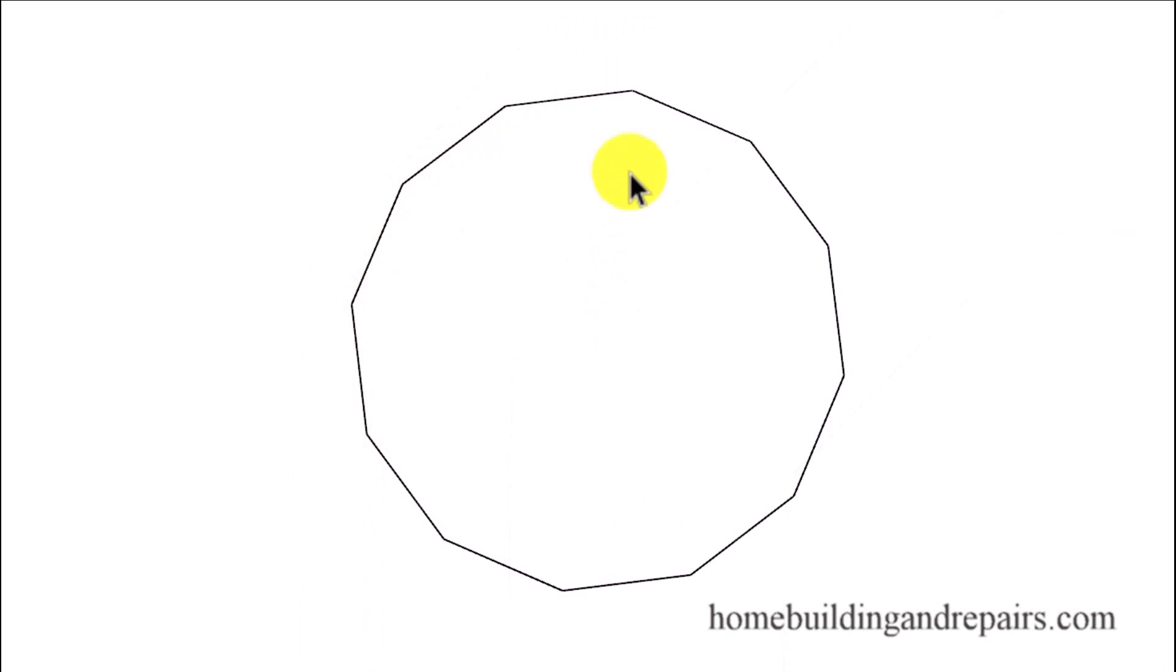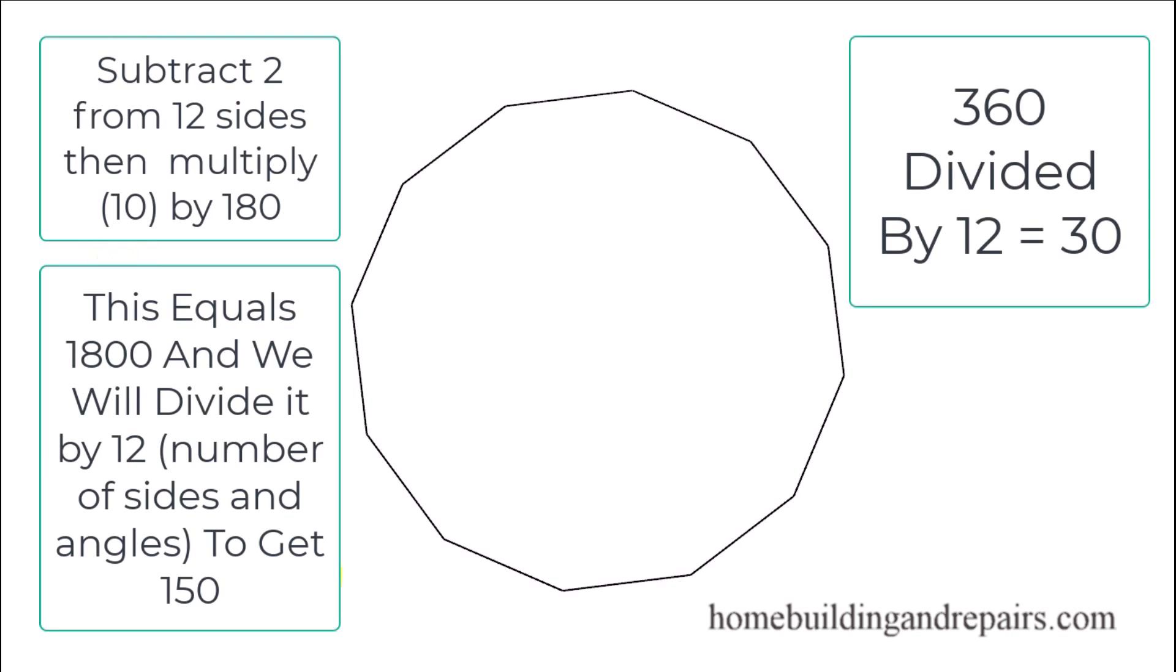In our last example, let's take a polygon with 12 equal shaped sides. Now I'm not going to be narrating my way through this one. I'm simply going to end the video with all of the measurements you need for the inside and outside angles.